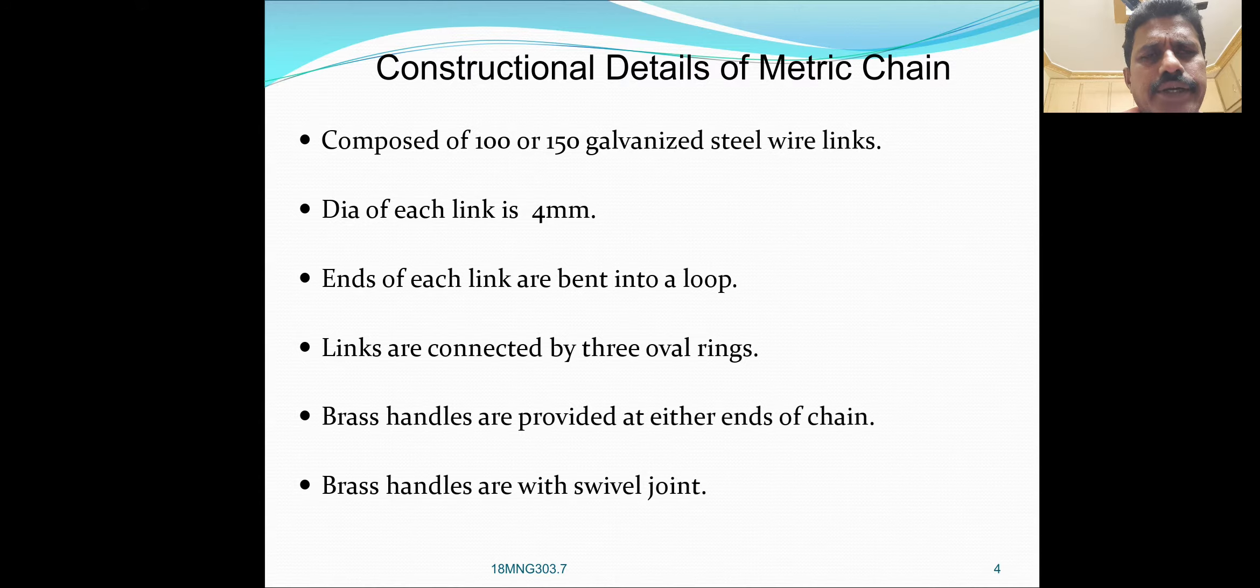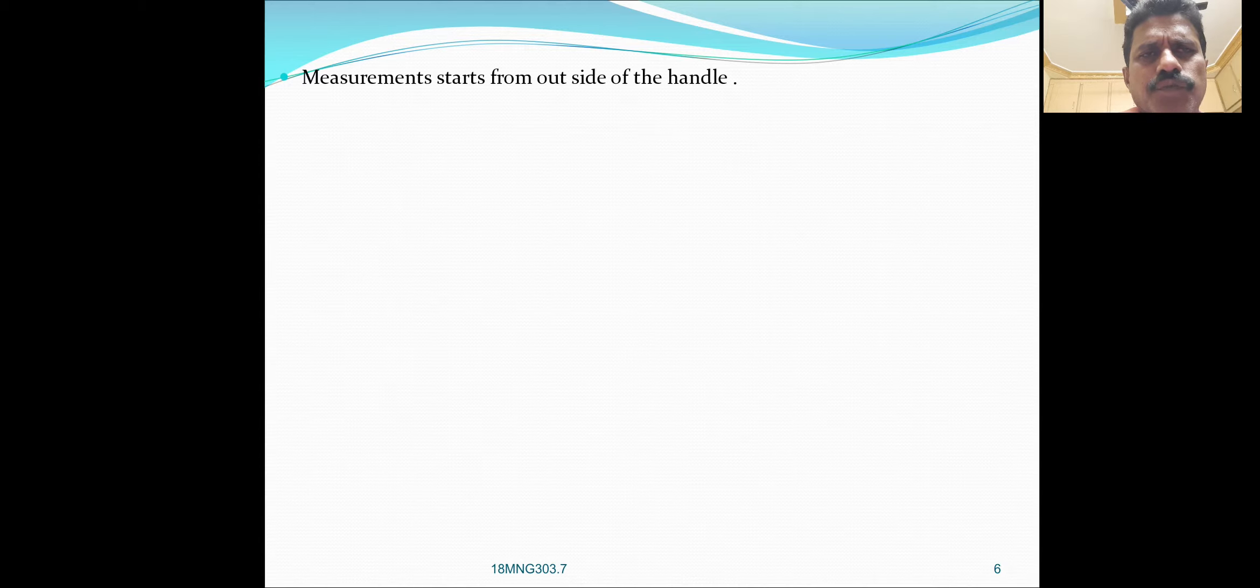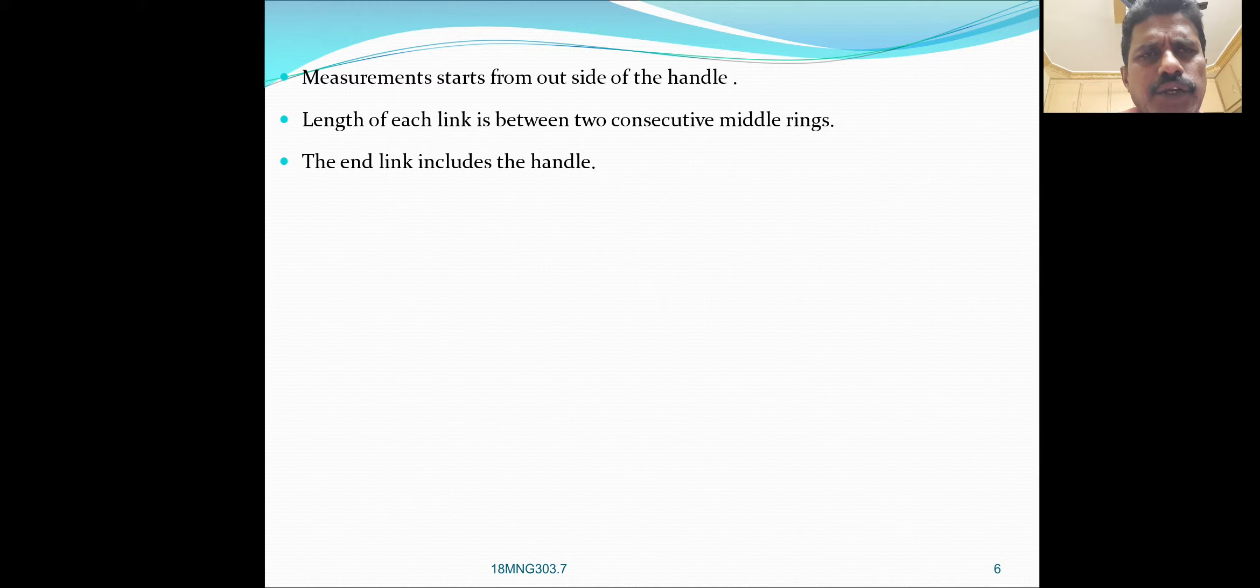For the metric chain, we will show you a diagram. The links are connected by three oval rings for flexibility. The measurement starts from outside of the handle. Length of each link is between two consecutive middle rings. The end link includes the handle.